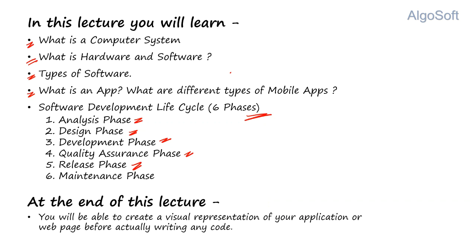You release it on the Play Store or Apple Store, and users can download and use it. After that there is a maintenance phase. After getting user feedback or when technology advancements happen, you upgrade your application. Bugs are rectified and advancements are made over time. So this is a broad overview that we would be covering in this lecture. Let's go with the first topic.